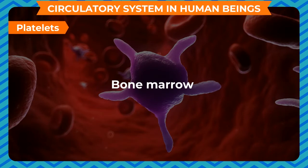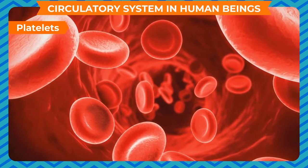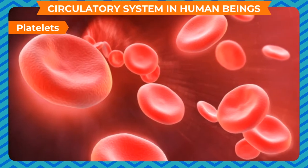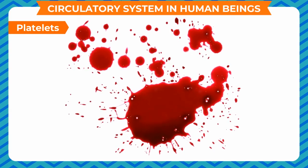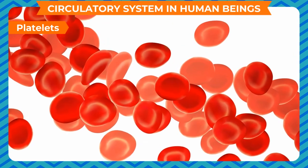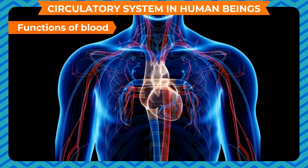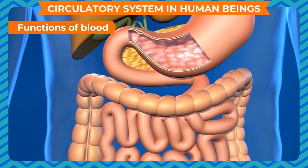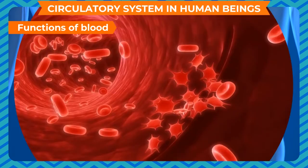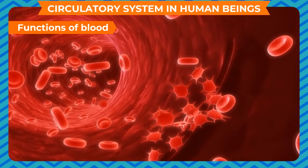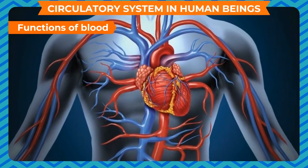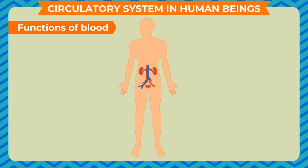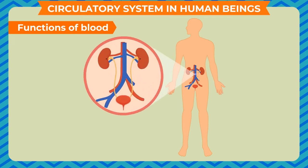Platelets are made in the bone marrow. They are much smaller in size and have a lifespan of about 10 days. The main function of platelets is to help in the clotting of blood when we are injured; if blood does not clot, we would bleed to death. Functions of blood: it carries oxygen to various parts of the body; it carries digested food material for absorption; platelets help prevent excessive bleeding; it helps maintain a constant body temperature; it protects the body against germs; and it transports waste materials to the excretory organs.